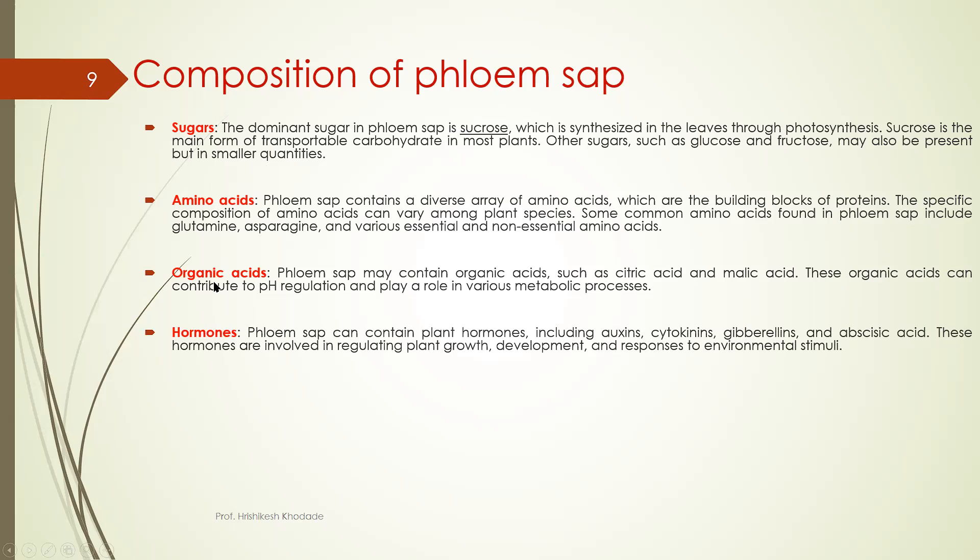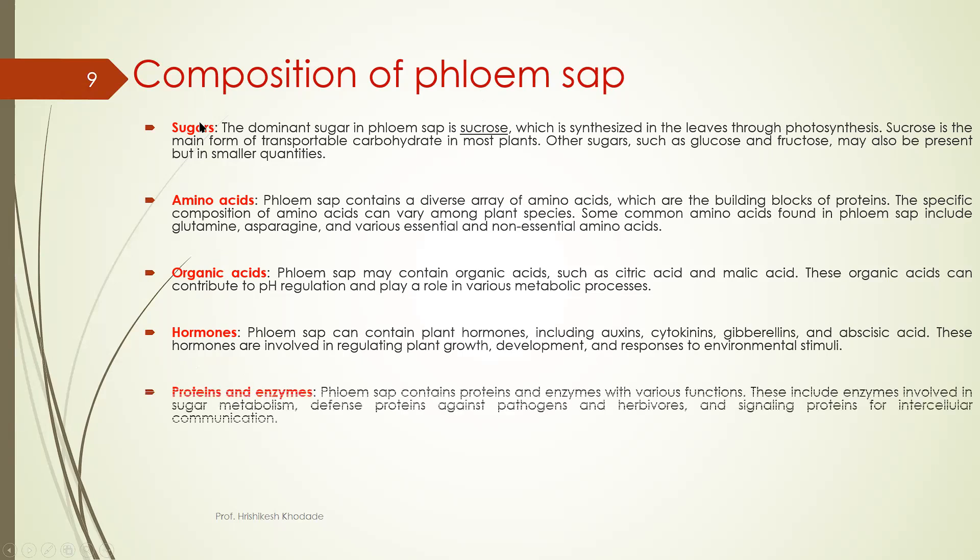Then we have various hormones because hormones are synthesized in one location and delivered to the other location with the help of this phloem in the phloem sap. So phloem sap is solution which consists of various different types of nutrients.